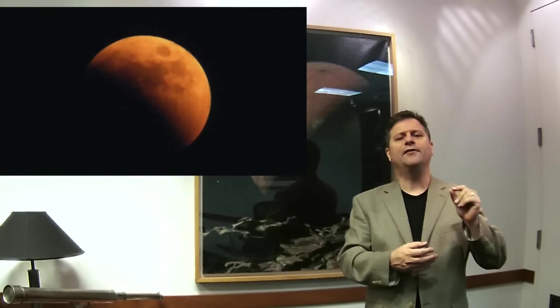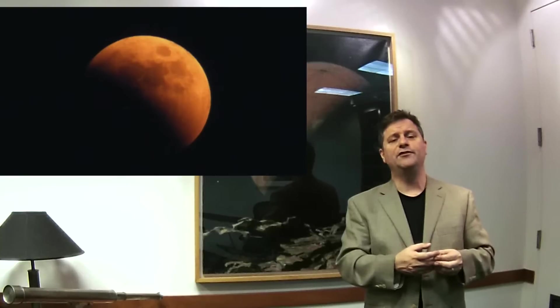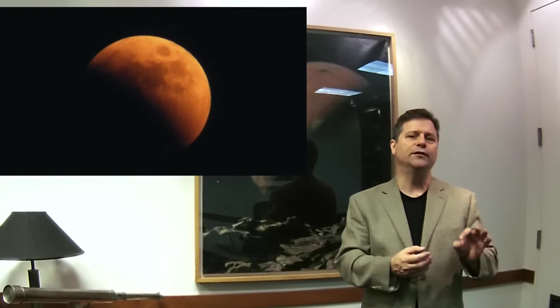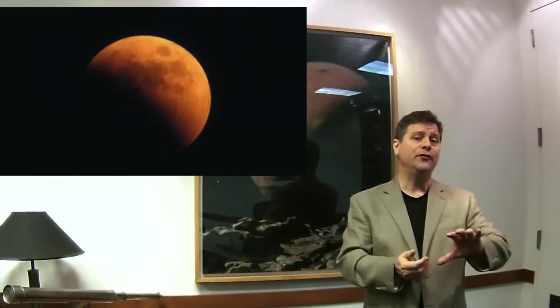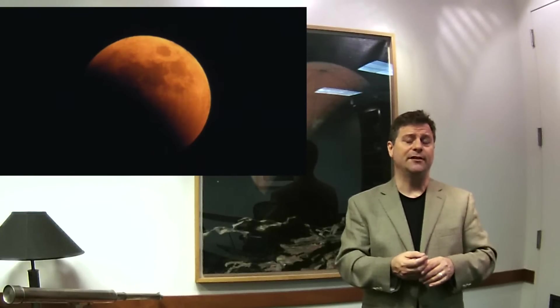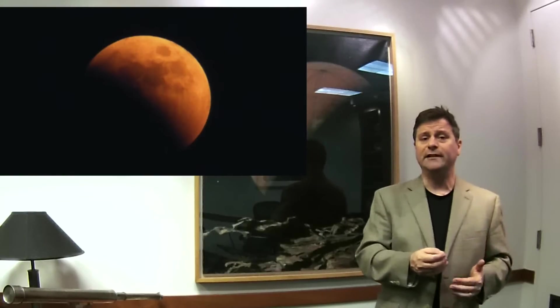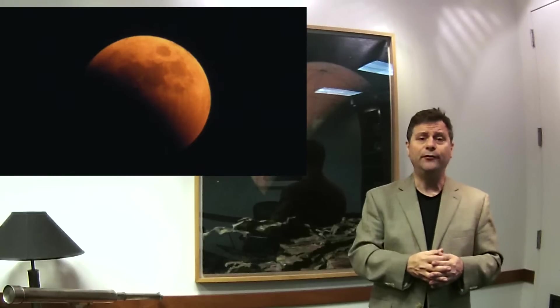We talked about previously that lunar eclipses only happen at full moon. And as the moon goes into the shadow of the Earth, we find that the shadow is not straight, it's curved. So people have known for thousands of years that the Earth is actually round because of the shadow of the lunar eclipses on the moon.